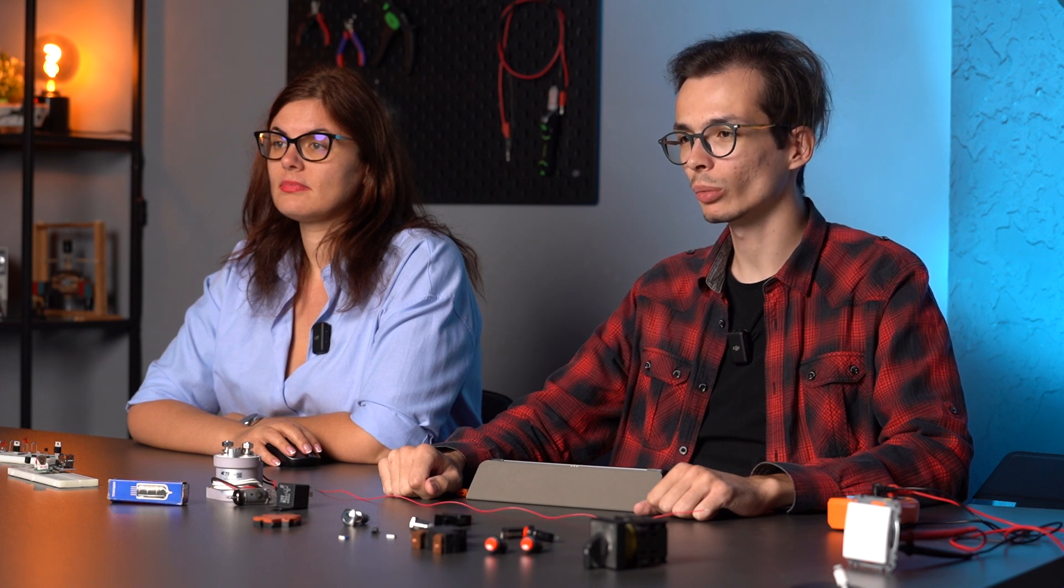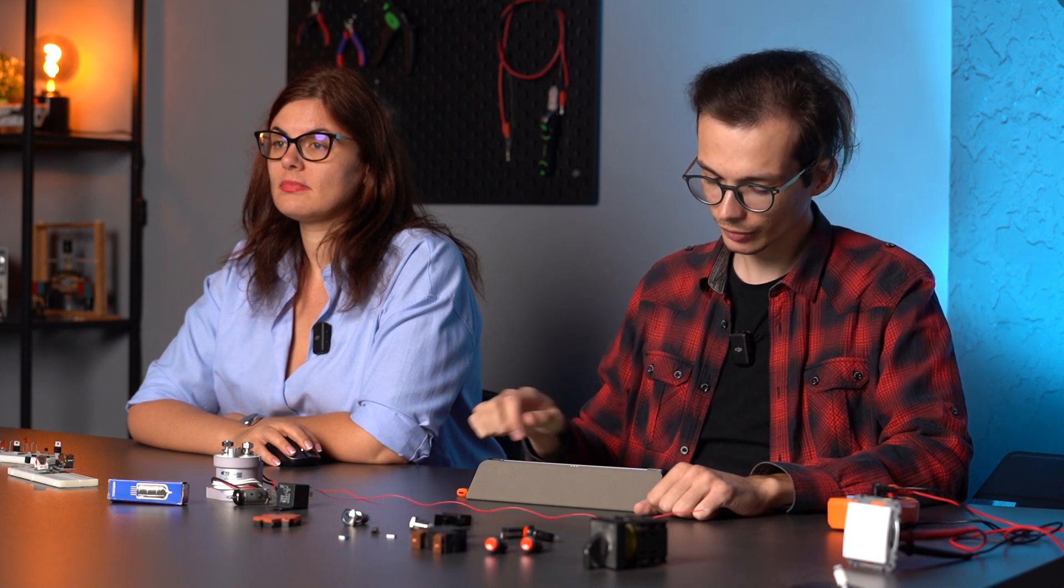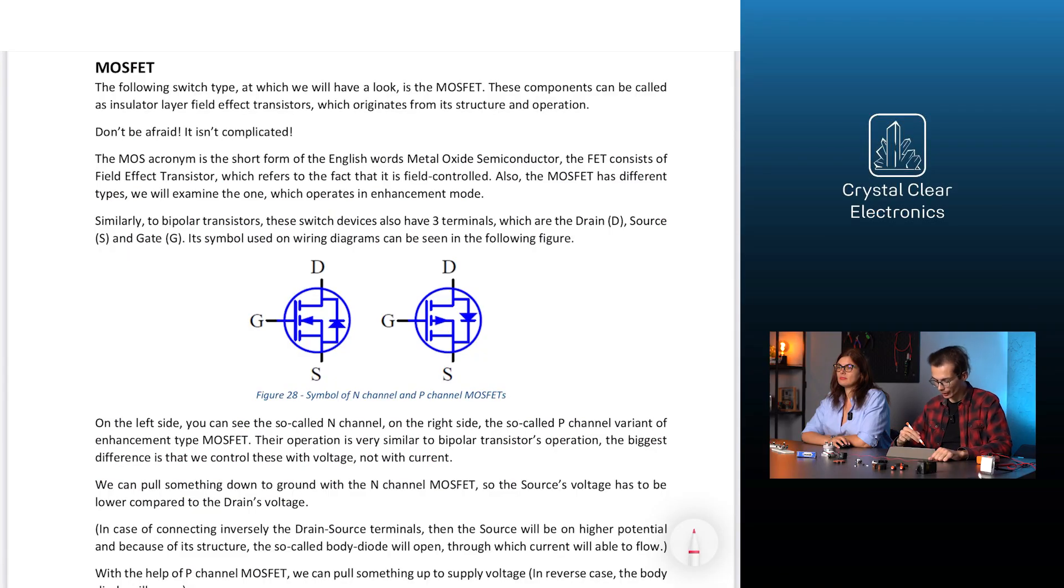Its symbol used on wiring diagrams can be seen in the following figure. On the left side, you can see the so-called N-channel, on the right side, the so-called P-channel variant of enhancement type MOSFET.